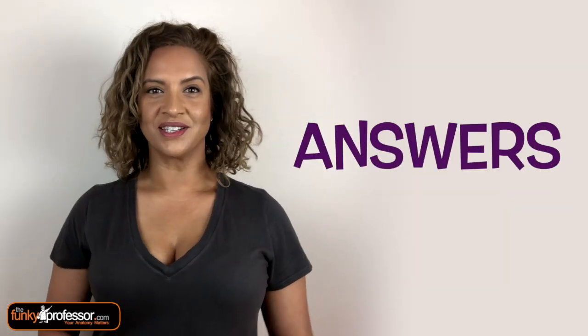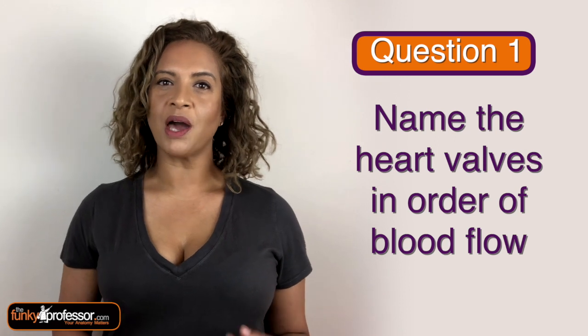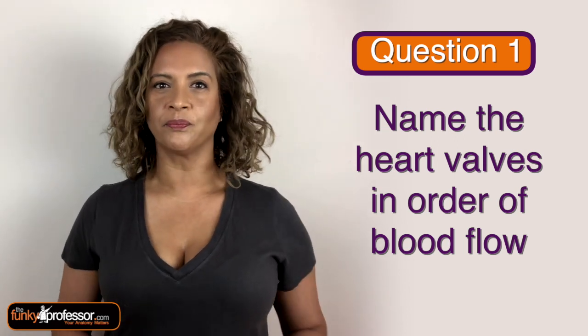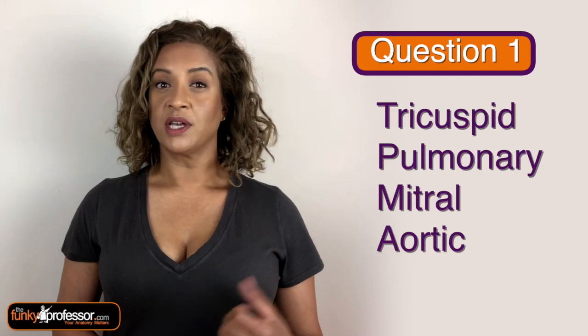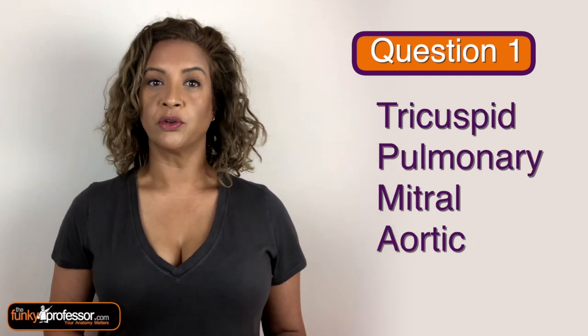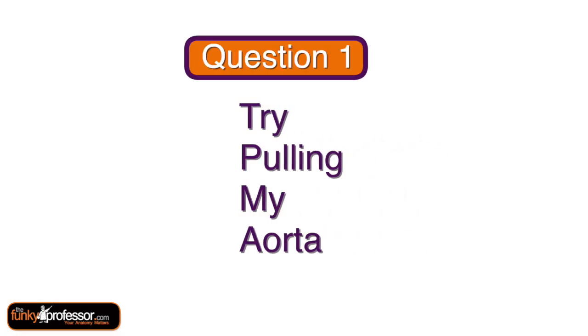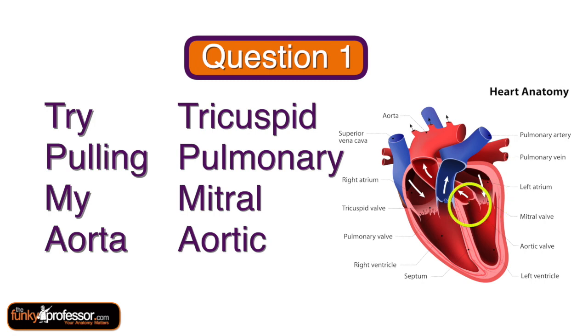So let's go over the answers. Number 1 was: could you name the heart valves in order of the way the blood flows through them? The heart valves are the tricuspid, the pulmonary, the mitral, and the aortic. The mnemonic I use is 'Try Pulling My Aorta' — Try for tricuspid, Pulling for pulmonary, My for mitral, and Aorta for aortic.